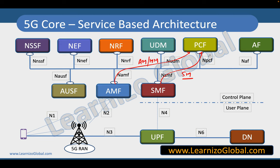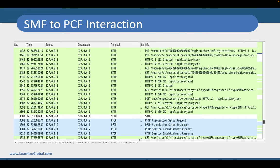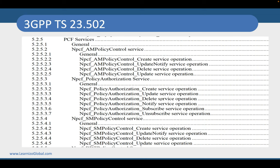All these services are available via the service-based interface called NPCF. Before SMF communicates to PCF, it must discover the PCF details from the NRF — NF repository function — via a GET message where the target NF is PCF and the requester NF is SMF. Once it gets the PCF details from NRF, it sends a message to PCF using a service provided by PCF. You can refer to 3GPP technical specification 23.502 to see all services provided by PCF.